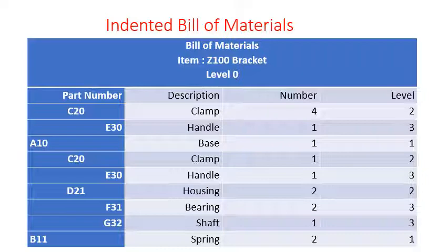Now let us look at the indented Bill of Materials — another form representing the same problem. The part number is given, the description is given, the quantity is given, and the levels where each component lies. C20 occurs twice in the indented form, both at level 2, without confusion. The handle is at level 3 only. This indented Bill of Materials conveys the same information as the product structure tree.